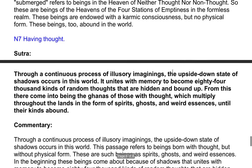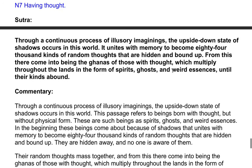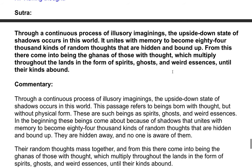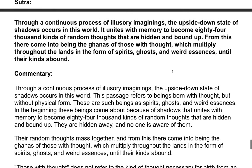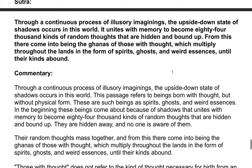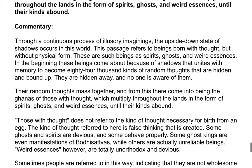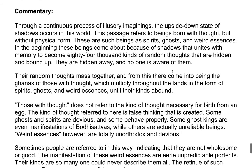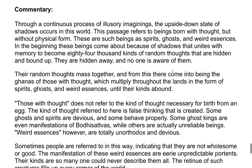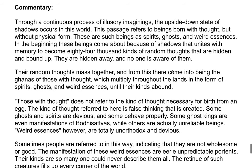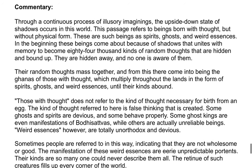Sutra: Through a continuous process of illusory imaginings, the upside down state of shadows occurs in this world. It unites with memory to become 84,000 kinds of random thoughts that are hidden and bound up. From this there come into being the ganas of those with thought, which multiply throughout the lands in the form of spirits, ghosts, and weird essences, until their kinds abound. Commentary: This passage refers to beings born with thought but without physical form. These are such beings as spirits, ghosts, and weird essences; in the beginning these beings come about because of shadows.